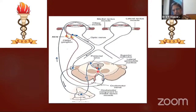For example, a pineal body tumor can compress the dorsal portion. At that time, the light reflex will be damaged, but ventrally the accommodation pathway is spared — so the pupil can still react for accommodation. That is a classical finding called light-near dissociation of the pupil, seen in the syndrome that compresses the dorsal portion of the midbrain.